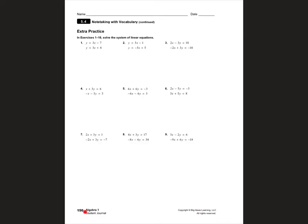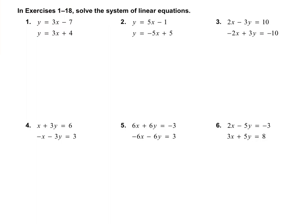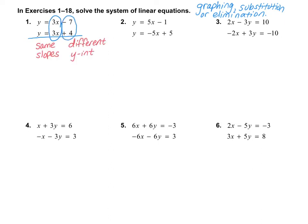We're going to skip page 149 and move on to page 150. In exercises 1 through 18, we want to solve the system of linear equations. We have three different ways to solve it: by graphing, by substitution, or by elimination. Since I don't have graph paper, I'm going to do substitution or elimination depending on what I'm given. In number 1, it's already written in y = mx + b form. I notice equal slopes and different y-intercepts, which means the lines are parallel, so there is no solution.